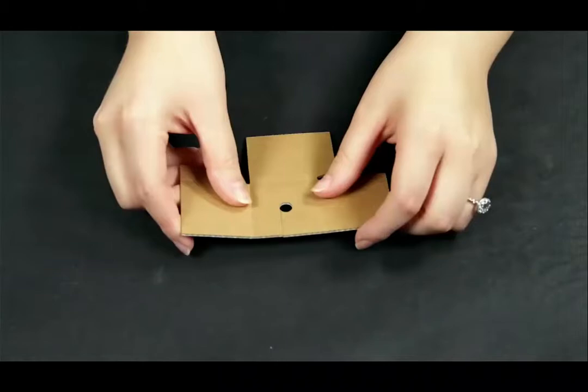Step 7: Fold part I to form a box. Glue or tape.